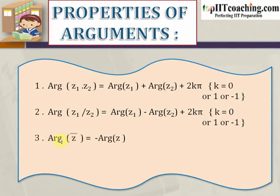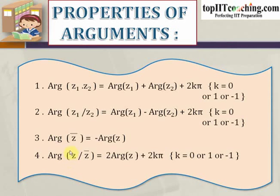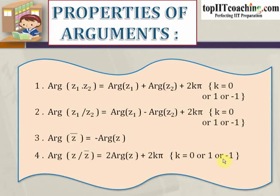The third is: argument of z conjugate is equal to minus of argument of z. So if z-bar represents the conjugate of a complex number z, then the argument of z conjugate is equal to minus of argument of z. The fourth is: argument of z by z conjugate is equal to 2 times argument of z plus 2kπ, where k is equal to 0, 1, or minus 1.